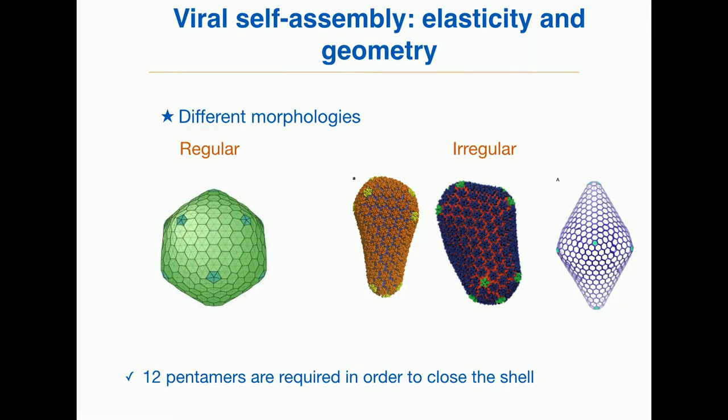If we try to understand what is the difference between the shapes of these viruses, we are led to the following conclusion. In all these structures, either regular or irregular, you can identify hexamers and pentamers. From topological rules, if you have a surface that you want to close, you must have exactly 12 net pentamers in the structure.